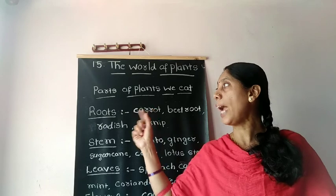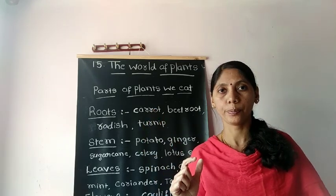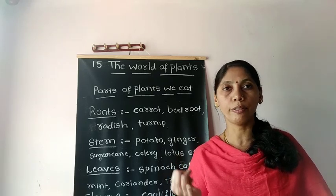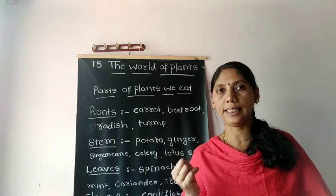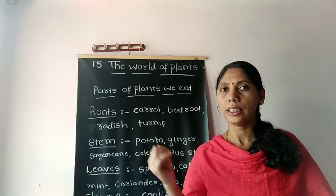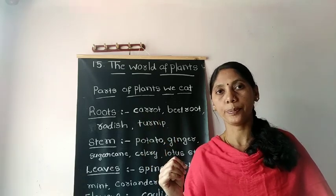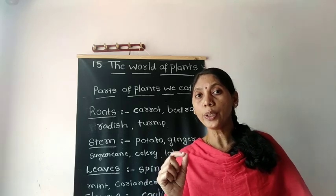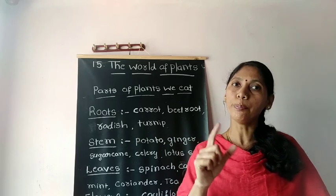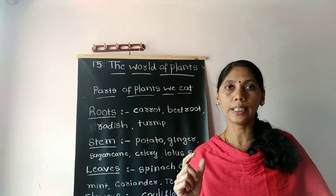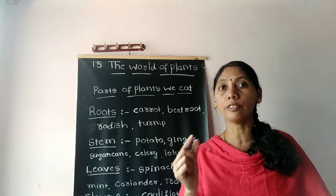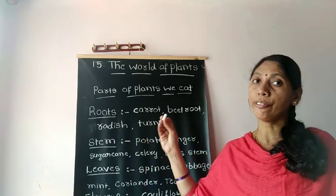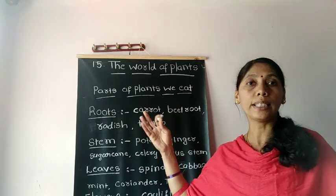Plants have different parts. They are root, stem, leaves, flower, fruits and seeds. These are all different parts of the plants. Most of our food comes from plants. We eat different parts of the plants as our food.